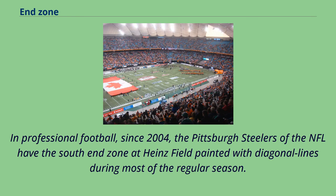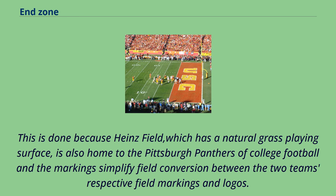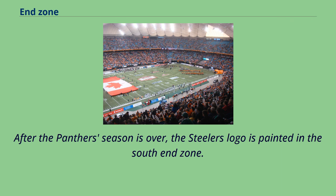In professional football, since 2004, the Pittsburgh Steelers of the NFL have the south end zone at Heinz Field painted with diagonal lines during most of the regular season. This is done because Heinz Field, which has a natural grass playing surface, is also home to the Pittsburgh Panthers of college football, and the markings simplify field conversion between the two teams' respective field markings and logos. After the Panthers' season is over, the Steelers' logo is painted in the south end zone.